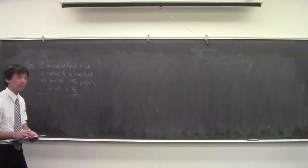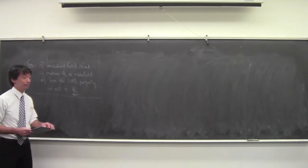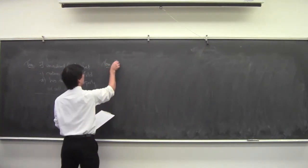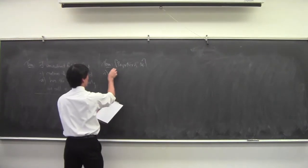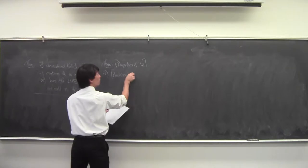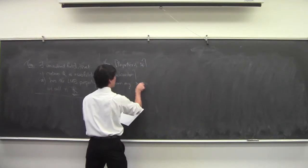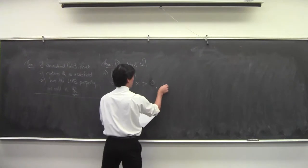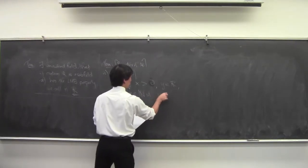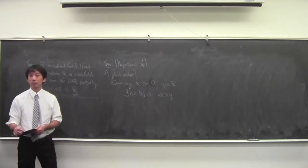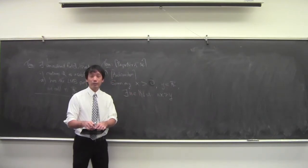Student: Based on the fact that R has the least upper bound property, can we say it has the greatest lower bound property? Professor: Yes, because of what we showed last time. So, theorem: properties of R. The first one is the Archimedean property. Given any x bigger than 0 and y in R, there exists an n in the natural numbers such that nx is bigger than y.